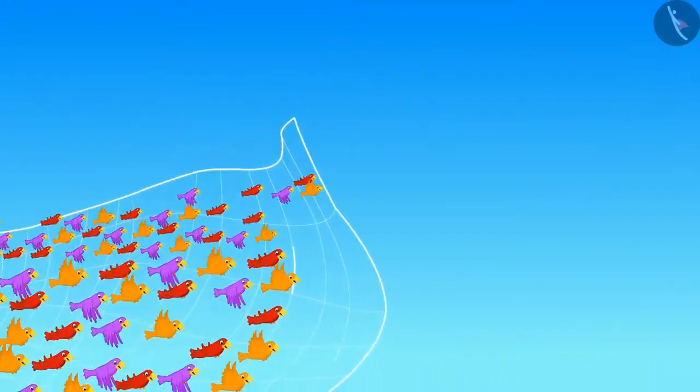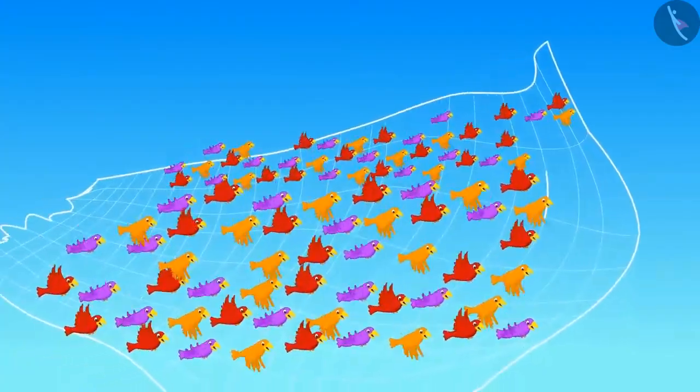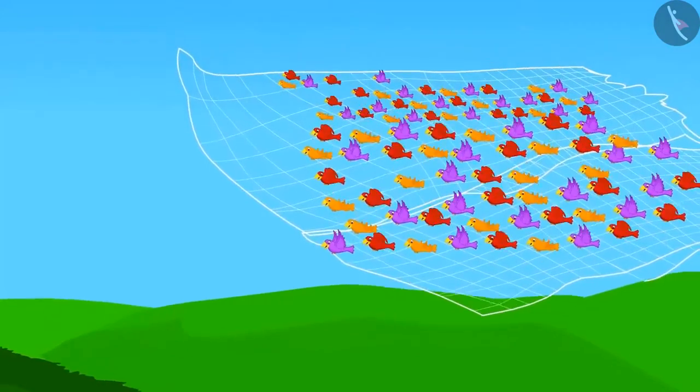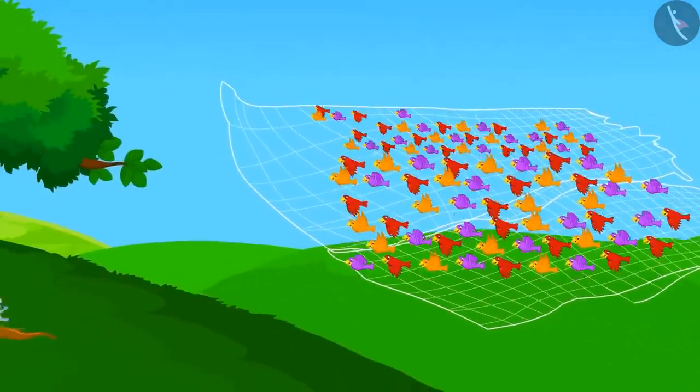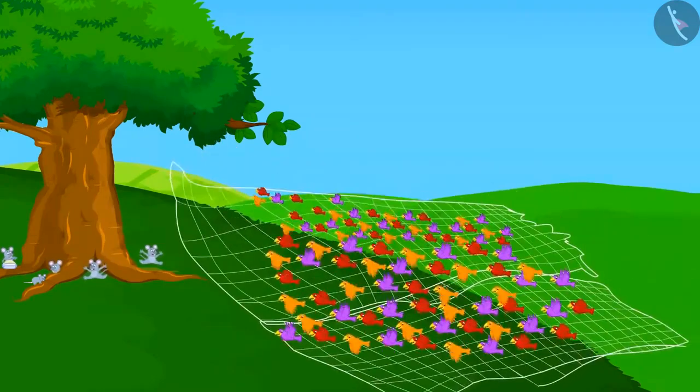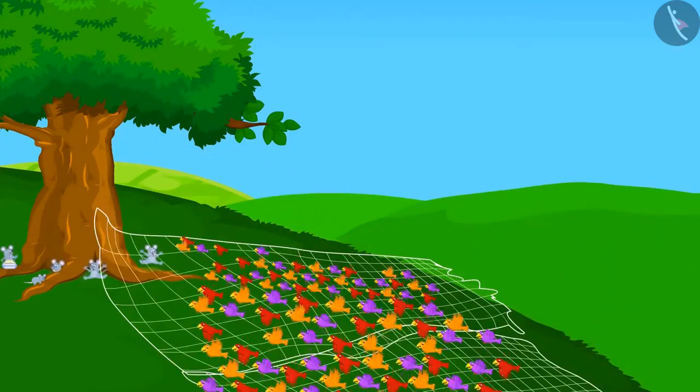The birds escaped from the fox, but their feet were still stuck in the net. Just then, they got another idea. Their rat friends lived at a distance from the forest. They flew to the rat's colony.